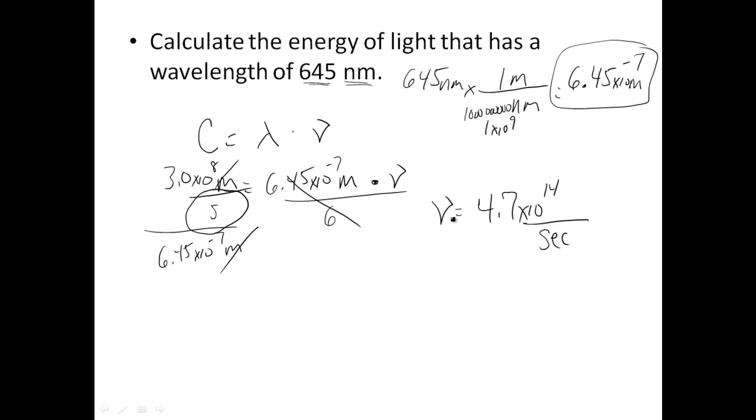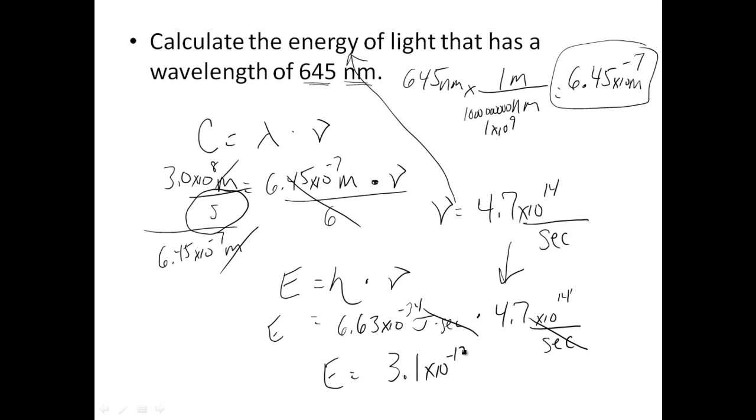Now, that's not my final answer, my final answer says what's the energy, but I do at least know the frequency, so now I can use the second equation. Energy equals Planck's constant times frequency. We don't know energy, we're solving for that, so there's my variable. 6.63 times 10 to the negative 34th joules seconds times 4.7 times 10 to the 14th over seconds. See the seconds cancel, and I end up with joules, energy is going to be 3.1 times 10 to the negative 19th joules.